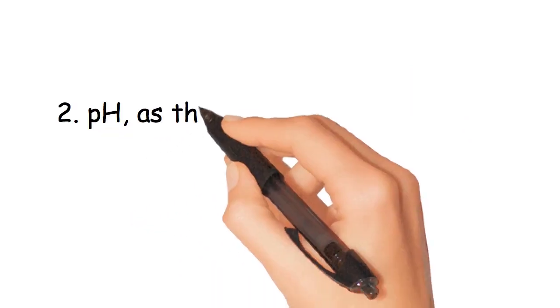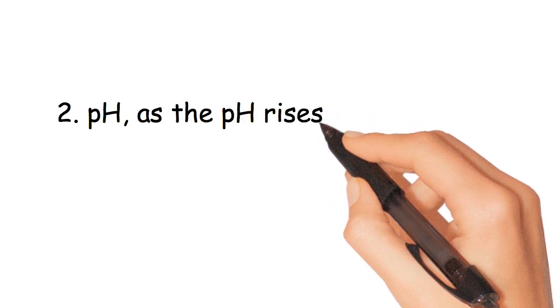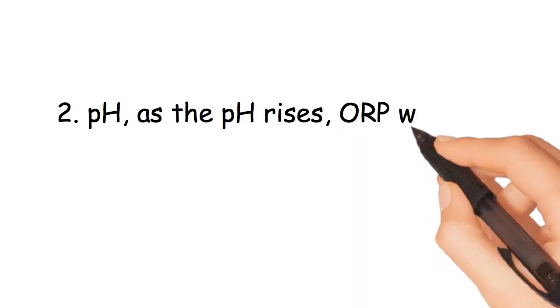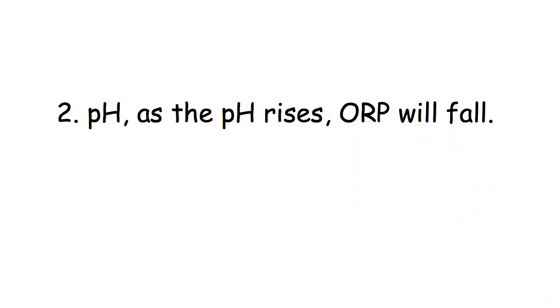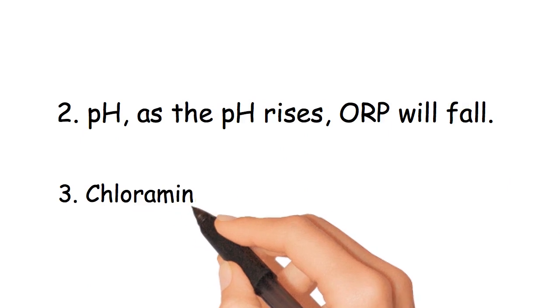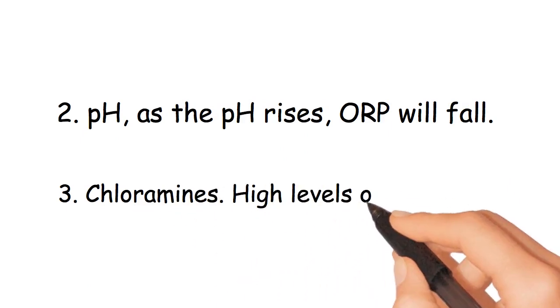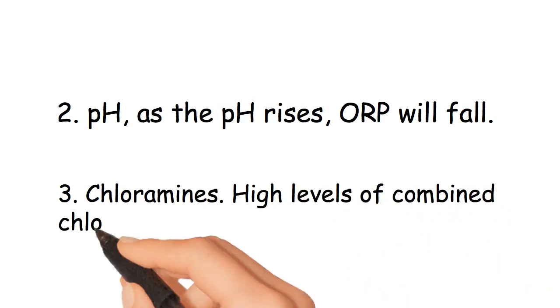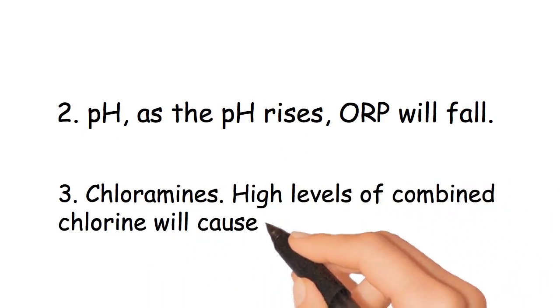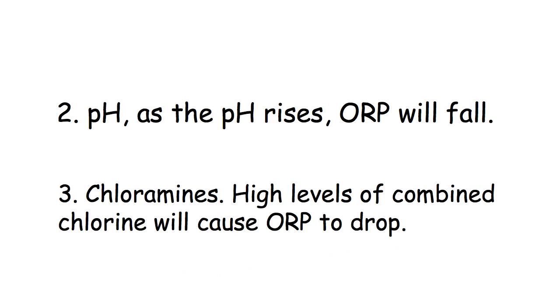Variable 2: pH. As the pH rises, ORP will fall. Variable 3: Chloramines. High levels of combined chlorine will cause ORP to drop.